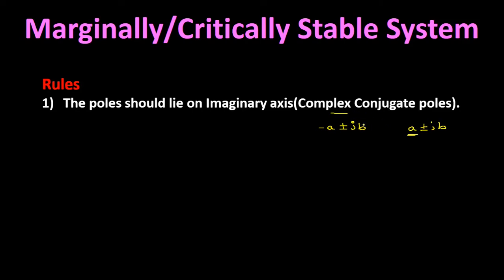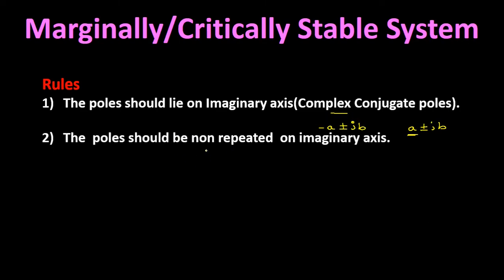The second rule is that poles should be non-repeated on the imaginary axis — two poles should not lie at the same position on the imaginary axis. If repeated poles exist at the same position on the imaginary axis, the system becomes unstable. If non-repeated poles exist on the j·omega axis, the system is marginally or critically stable.